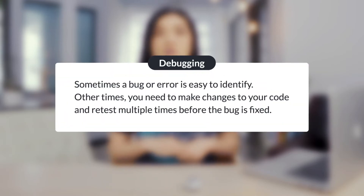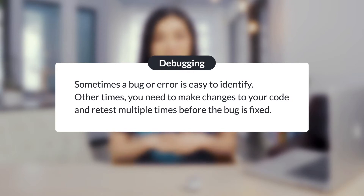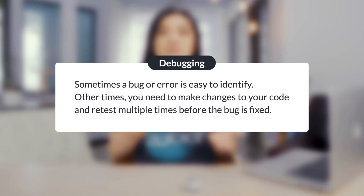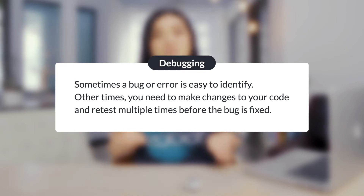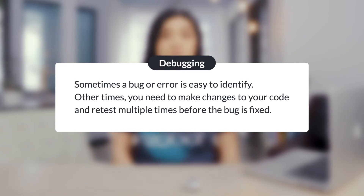Sometimes a bug or error is easy to identify. Other times you need to make changes to your code and retest multiple times before a bug is fixed. Debugging is an important part of learning to program.